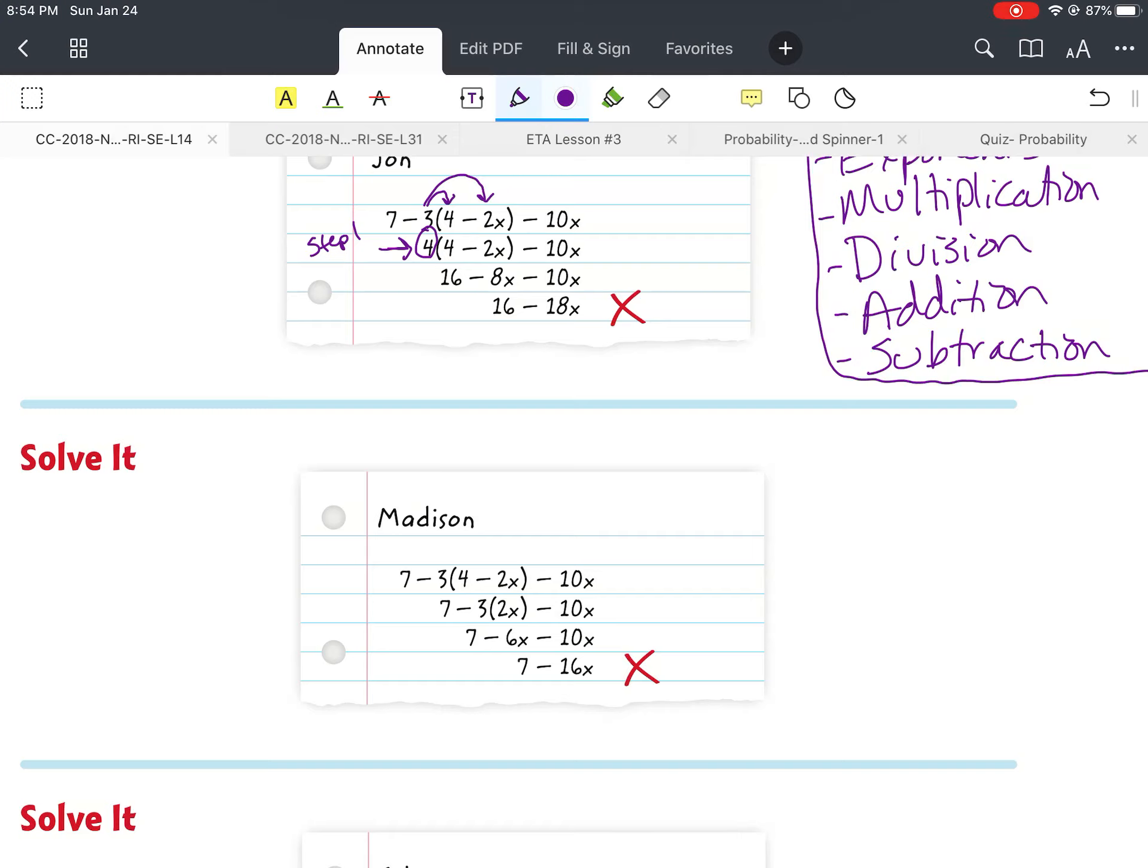Then if we look at Madison, she's got the original equation right there. Then we've got 7 minus 3 times 2x minus 10. So if we look, she made a mistake here. Because what she did was the 3 times the 2x, but she didn't do the 3 times the 4. She left that completely out. So of course, whenever she did that, whenever she rewrote her equation, that's going to make it totally wrong.